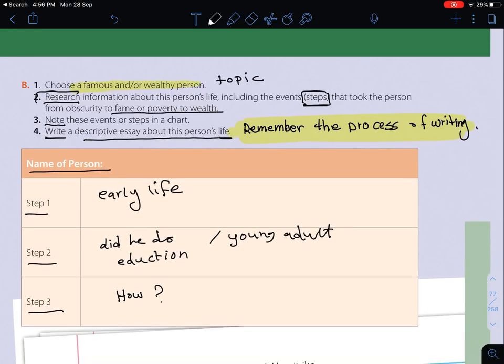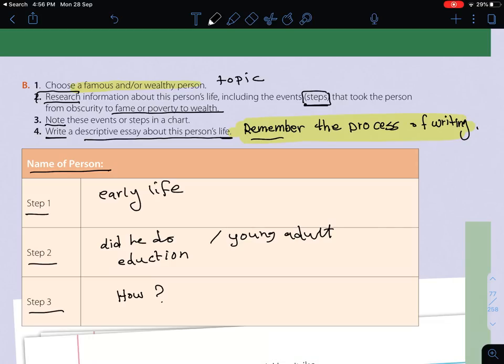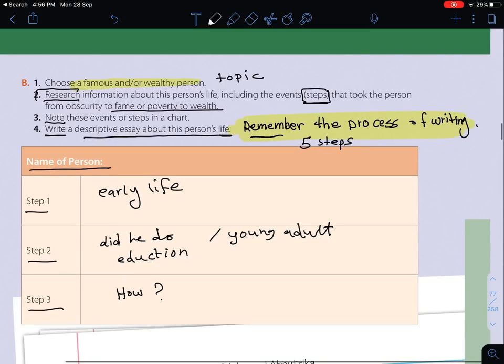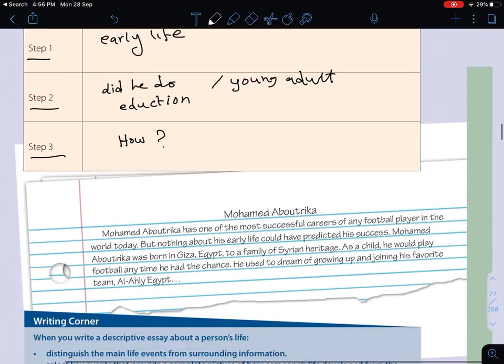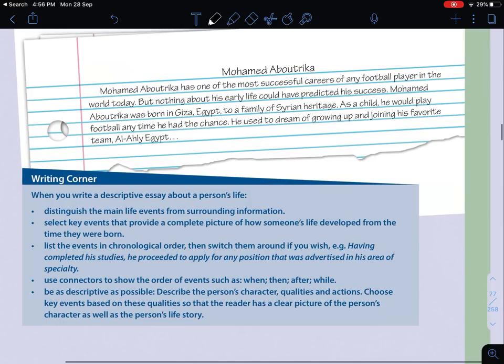You will note and write down the notes, and then you have to write a descriptive essay about this person's life. Just remember the process of writing as I have explained to you, and there are five steps. We have to pre-write, think about the topic or the things, draft, revise, edit, and the last thing is publishing. Just go to the previous writing video. Here is an example about Mohamed Aboutrika, a famous footballer or soccer player. He is Egyptian.